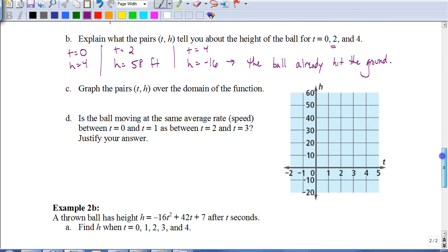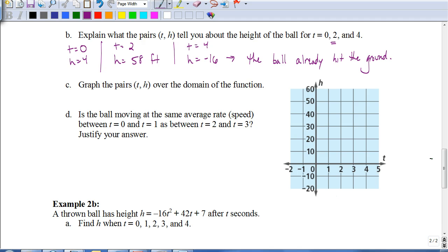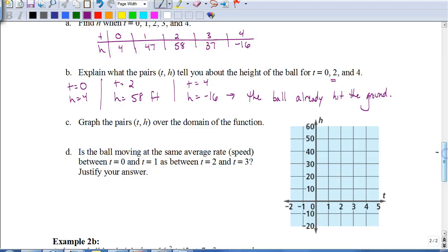Now they say to graph the domain, graph these coordinates. So here we have our grid already set up for us. So after 4 seconds, 0, 4 would be just under halfway here. After 1 second, it would be up to 47, which would be a little over halfway. After 2 seconds, it would be up to 58. After 3 seconds, it's down to 37. And 4 seconds, it's down to negative 16. So there's the path that the ball would travel.